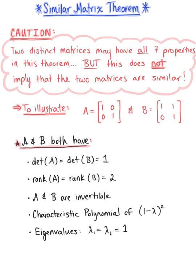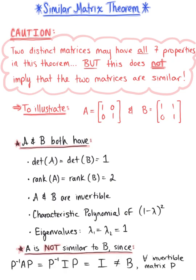So all of these properties are holding true, but matrix A is not similar to matrix B, since the inverse of matrix P times matrix A times matrix P is equal to the inverse of P times the identity matrix times matrix P, which equals the identity matrix.